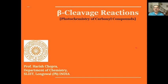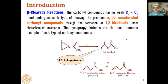This lecture is on beta cleavage reactions, in continuation of our previous lectures on photochemistry of carbonyl compounds, in which we studied Norrish type 1 reactions, Norrish type 2 reactions, and the Paternò–Büchi reaction. Beta cleavage reactions take place in carbonyl compounds having a weak C-alpha C-beta bond.